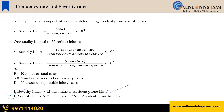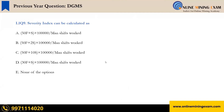If the severity index exceeds 12, then the mine is considered accident prone. This threshold of 12 is empirically driven — always remember this key number. The exam question asks: 'Severity index can be calculated as...'